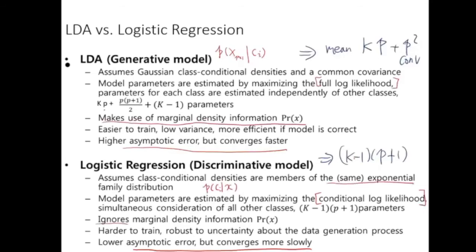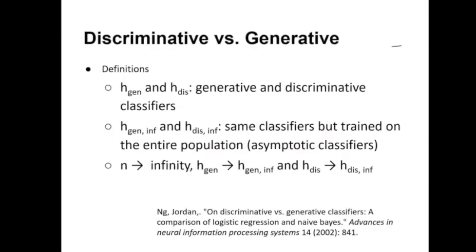The most important difference is to compare their behavior when you have an infinite number of samples. This is normally called asymptotic behavior — what is the behavior of your classifier as the number of samples grows to infinity?